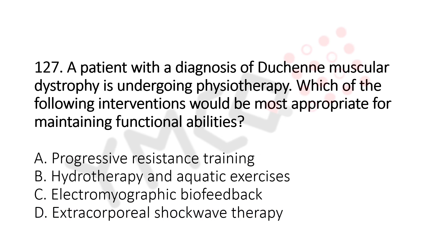Now let's move to question number 127. A patient with a diagnosis of Duchenne muscular dystrophy is undergoing physiotherapy. Which of the following interventions would be the most appropriate for maintaining functional ability? Option A: progressive resistance exercises. Option B: hydrotherapy and aquatic exercises. Option C: electromyographic biofeedback. Option D: extracorporeal shockwave therapy. The answer is option B: hydrotherapy and aquatic exercises.